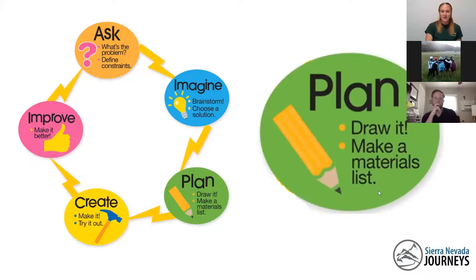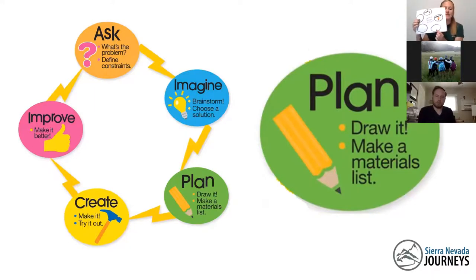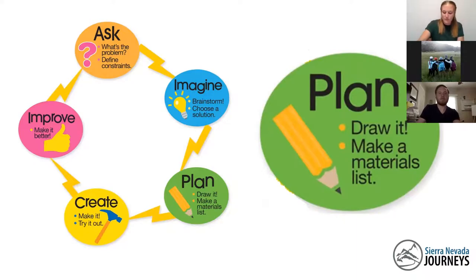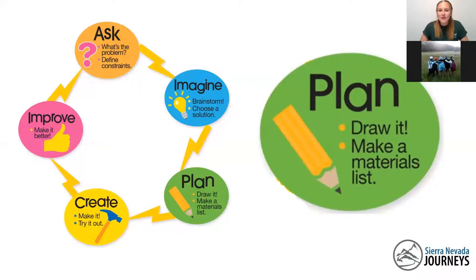The next step of our engineering design process is to plan. When we start planning, we're going to make a materials list, figure out what we need, draw a plan or blueprint, and do some research to figure out how we can make this bridge to get across the river. In your third bubble, write the word 'plan' or draw a picture to help you remember it. I'm going to draw a little pencil to remind me that sometimes engineers draw things.